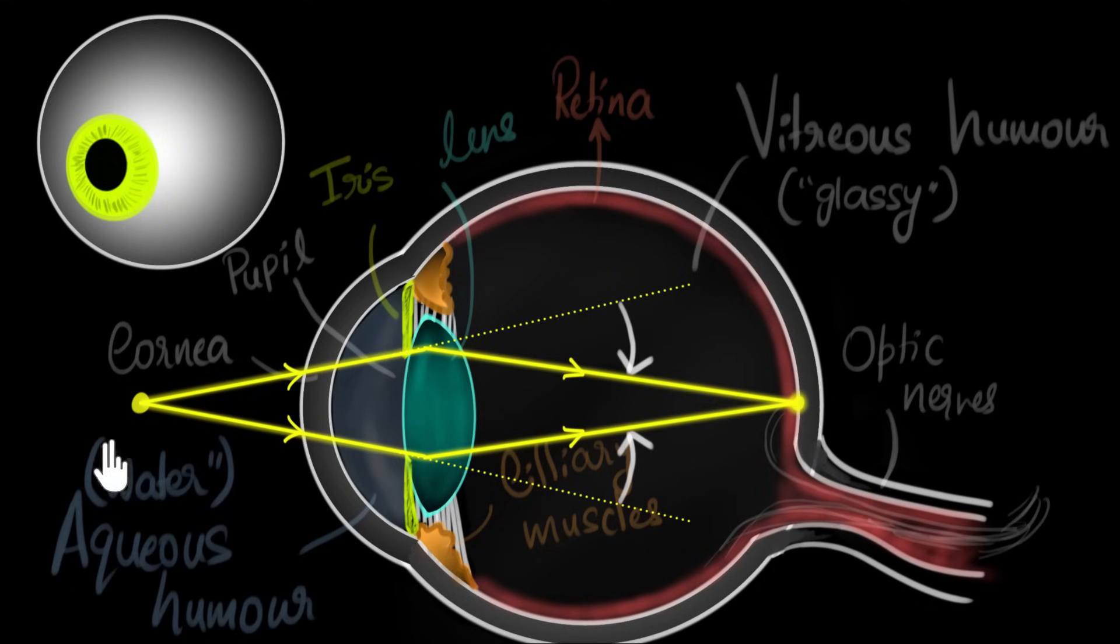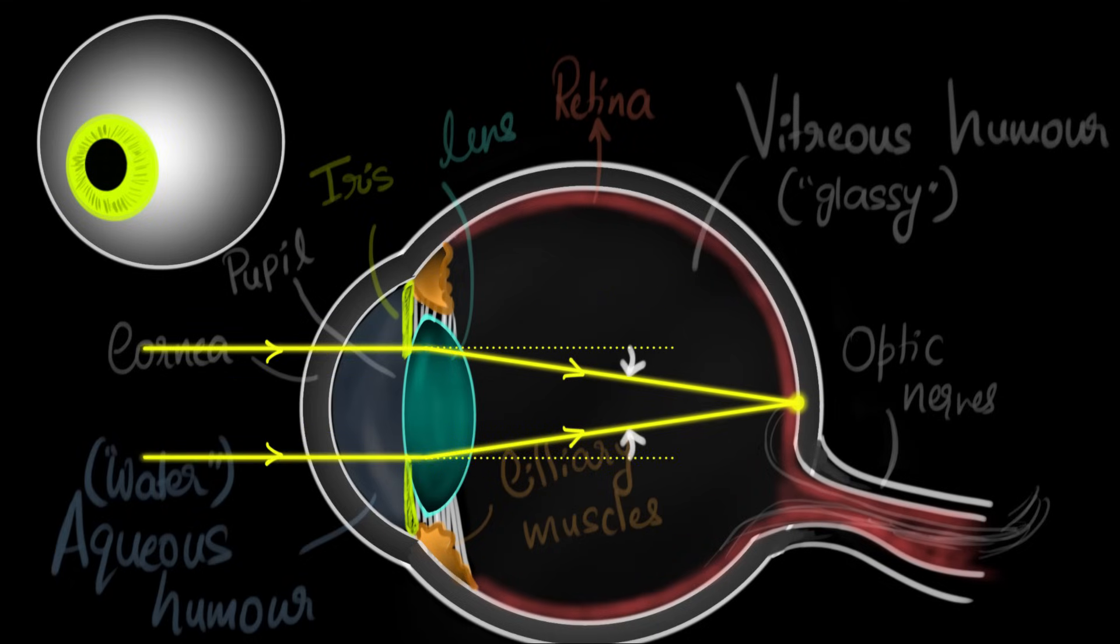So when objects are closer, we require more optical power, more bending. And when the objects are farther away, we require less optical power, less bending. So notice our eye should be able to change its power depending upon how far the objects are. And that is accomplished by these ciliary muscles.